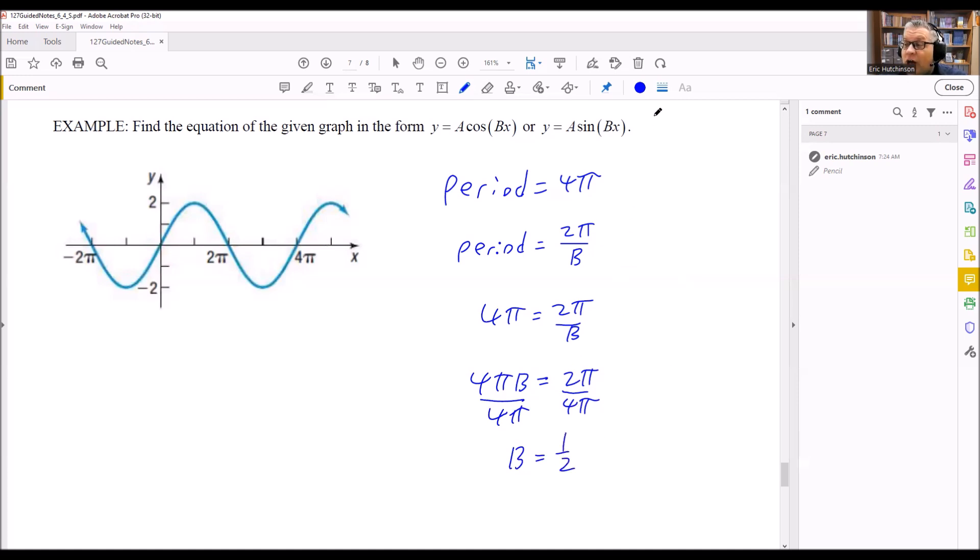So now we know it's a sine graph, and the B needs to be 1/2. The last thing we need is the amplitude, which is the A value. You find this by looking at how high the graph goes up to. So it's going to be 2.